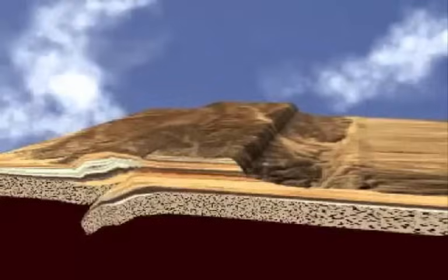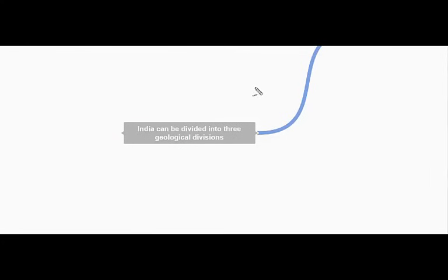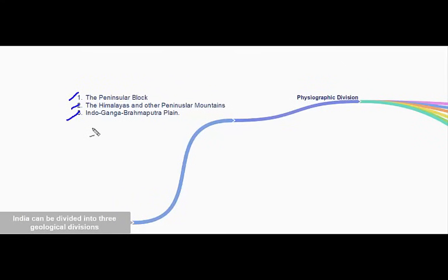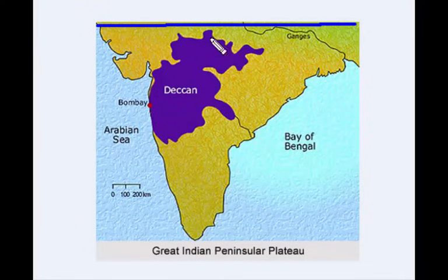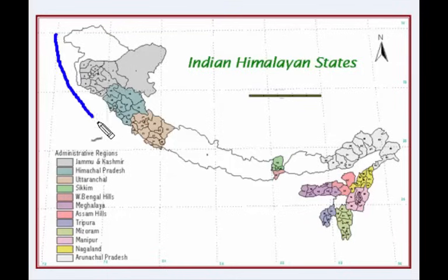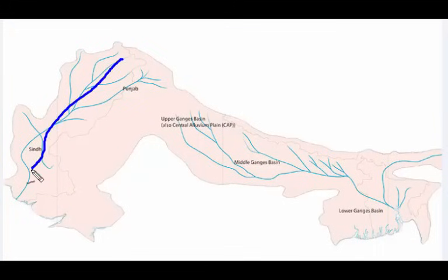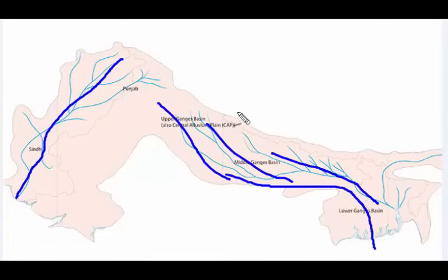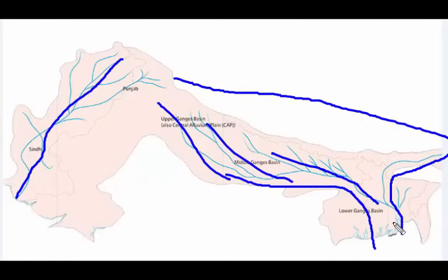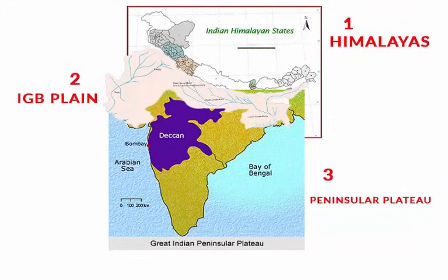Based on variations in its geological structure and formation, India can be divided into three geological divisions: the peninsula block, the Himalayas and other peninsular mountains, and the Indo-Ganga-Brahmaputra plain. The peninsula block extends only up to a certain limit — nothing beyond that, because the Himalayas were initially not part of India. They were formed as a result of the huge land collision when India got associated with Asia. The Indo-Ganga-Brahmaputra plain was formed by running water carrying soil from one place to another, forming a huge plain.